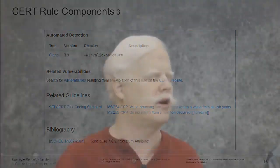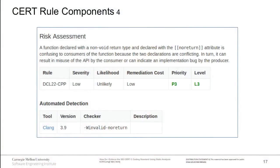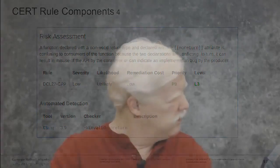The most important section of each rule is the risk assessment. Each rule has a risk assessment that dictates various aspects and can be used to triage: deciding which rules to fix now and which to address later. This prioritization makes fixing things much easier. The risk assessment consists of three metrics: severity, probability of exploitation, and remediation difficulty.